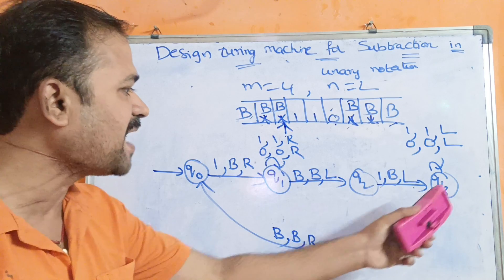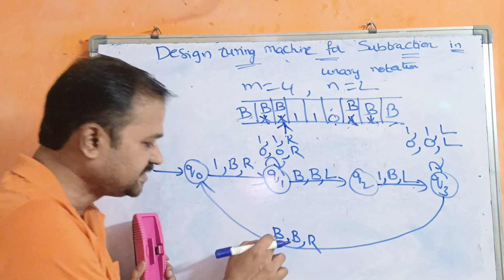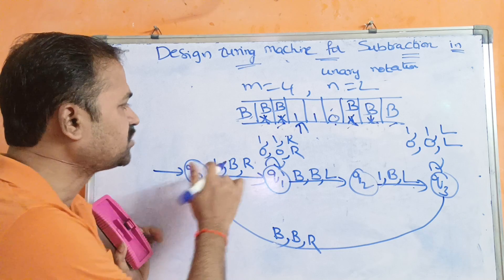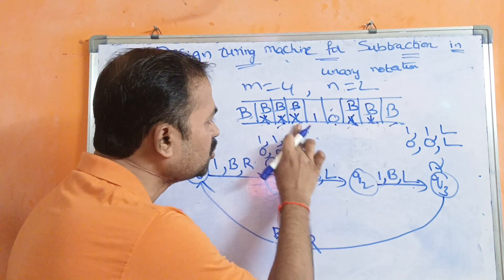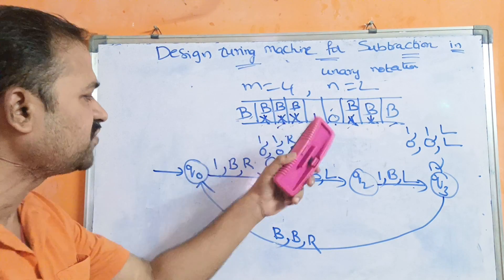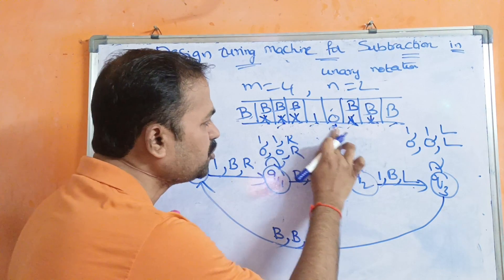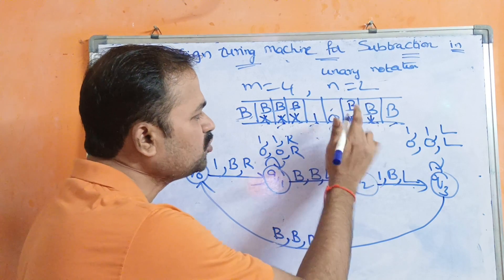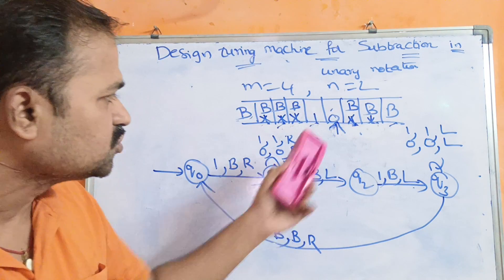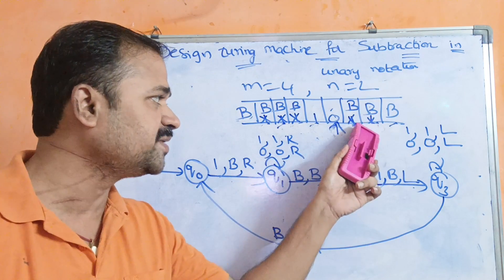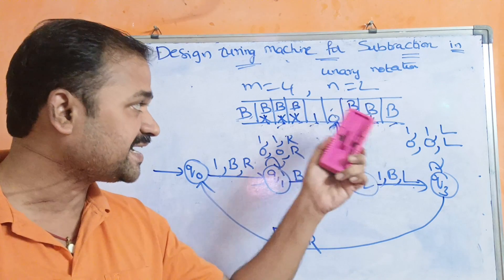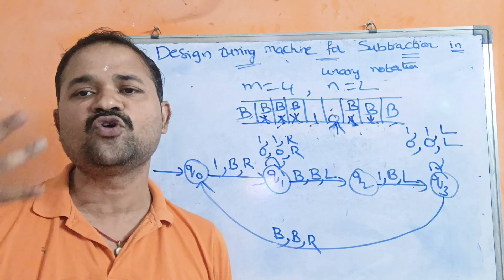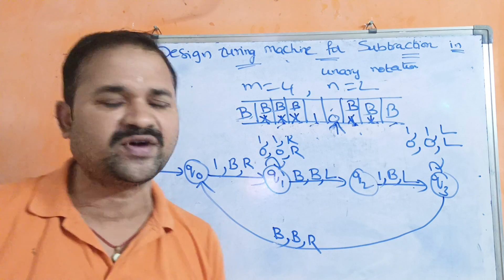On q3, zeros and ones are unchanged as we move left until we reach the blank symbol. Reading blank on q3 sends us back to q0. We move right to the third symbol. On q0, reading one replaces it with blank and moves right; on q1, remaining ones and zero are unchanged as we move right until we reach the blank symbol.